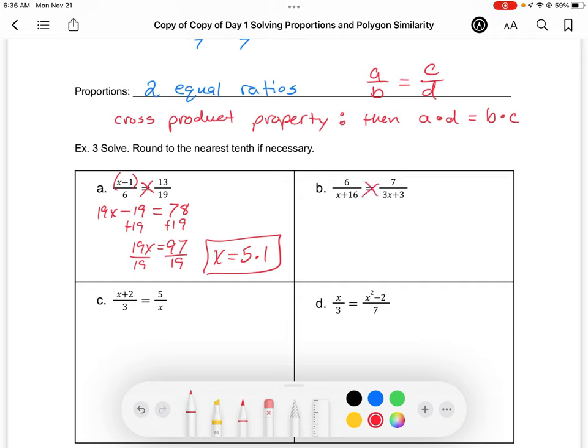On part b, we cross multiply. If I do 6 times 3x plus 3, I've got to multiply 6 by both of those, so that's 18x plus 18. Then 7 times x plus 16 gives me 7x plus 112. We get our like terms on one side, subtract 7x and 18 from both sides. 11x equals 94, divide by 11, you'll get about 8.5.